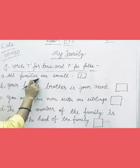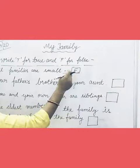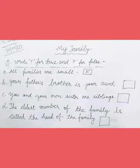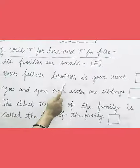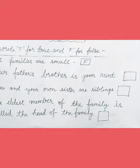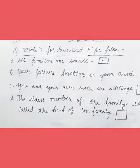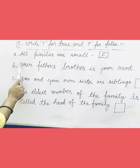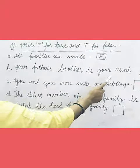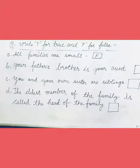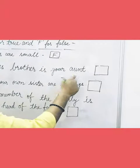So we will consider it a false statement. Write F for false. Next sentence: your father's brother is your aunt. So children, is it right or wrong? It is wrong, because the correct answer is: your father's brother is your uncle. So children, this is also a false statement.